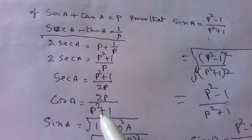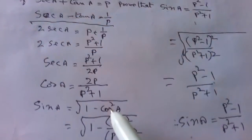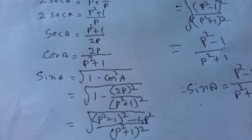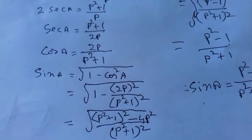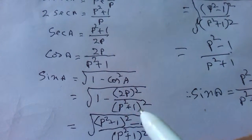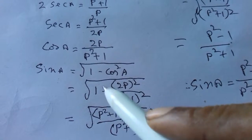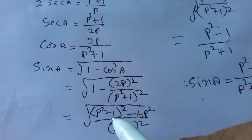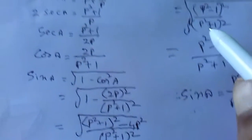We know cosA value is 2P by P square plus 1, then sinA is equal to root of 1 minus cos square A, which is root of 1 minus (2P by P square plus 1) whole square. Taking LCM as (P square plus 1) whole square, we get P square plus 1 whole square minus 4P square.